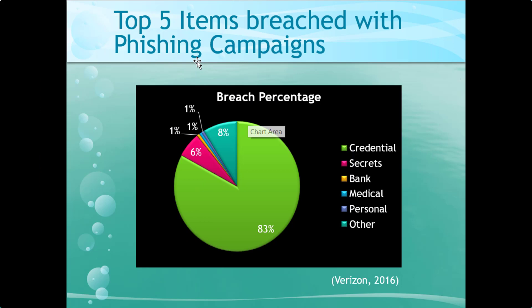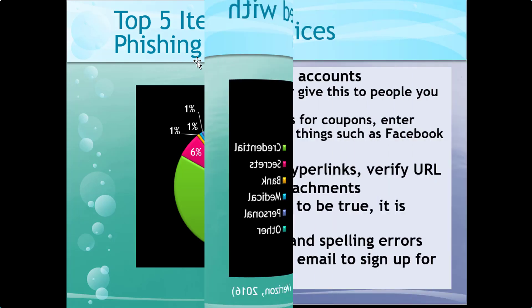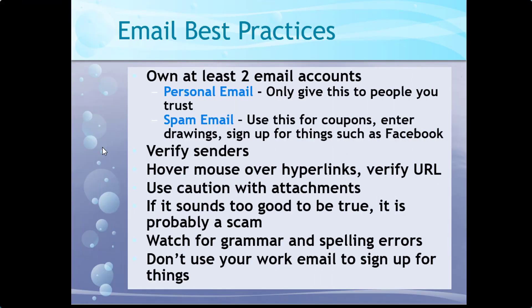According to Verizon, the top five items breached are credentials, secrets, bank information, medical information, personal information, and other information which could be anything. Email best practices: have your personal email — the one that sounds professional that you give to employers — and then have a spam email, one that you use for coupons, drawings, signing up for things, Facebook.